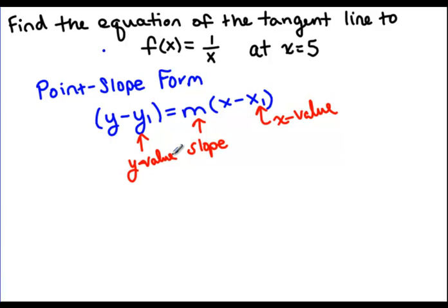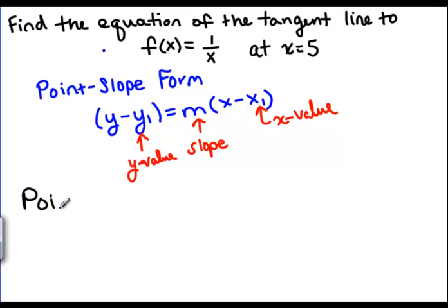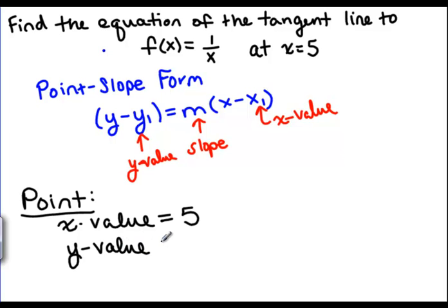So what do we need to know? We need to know a point and a slope. Well which is easier? Probably a point. So let's start with a point. Our point, well we already know the x value is given to us is 5. How do we find the y value?